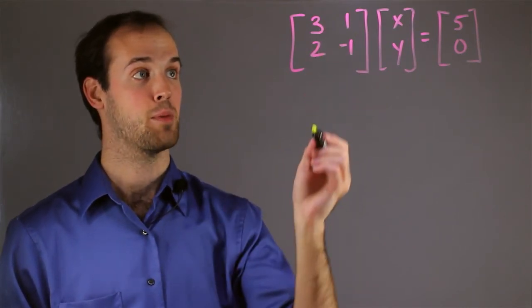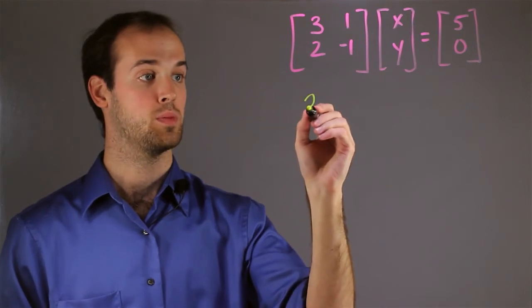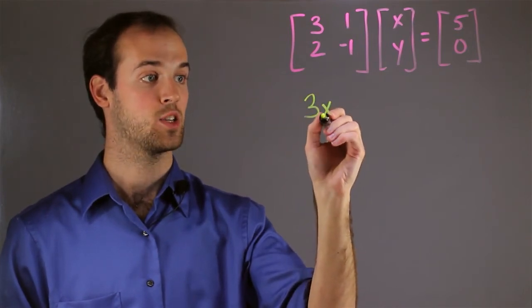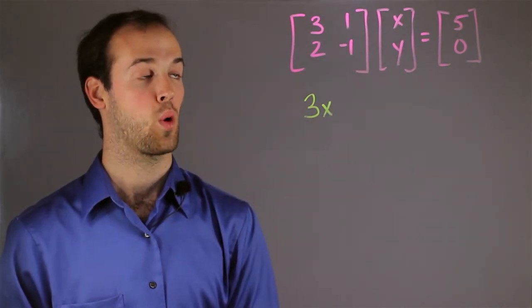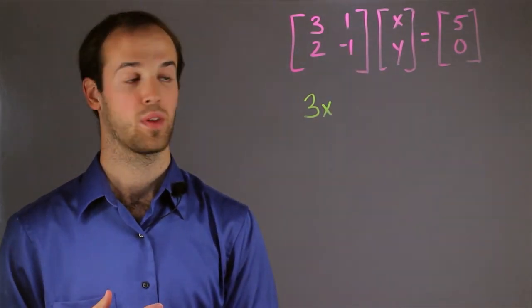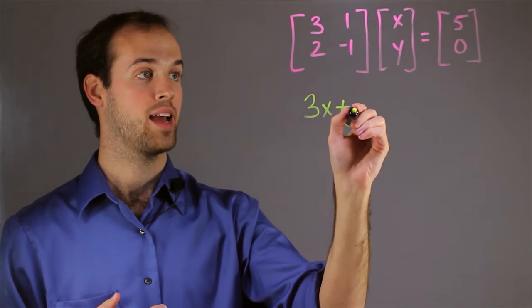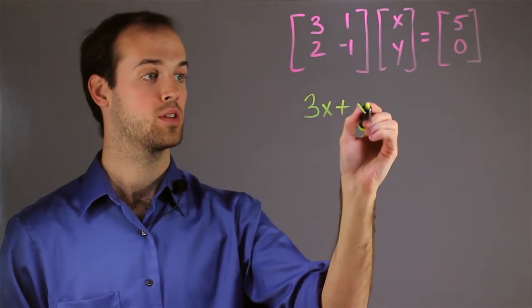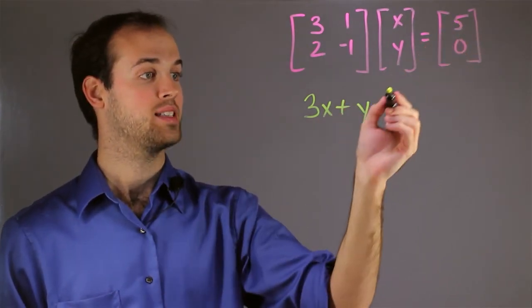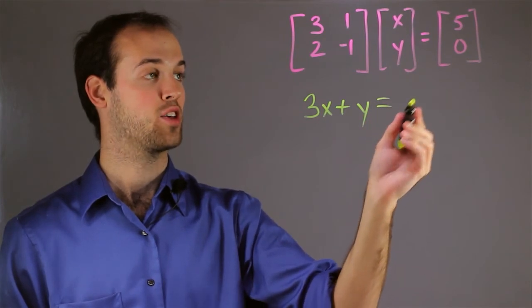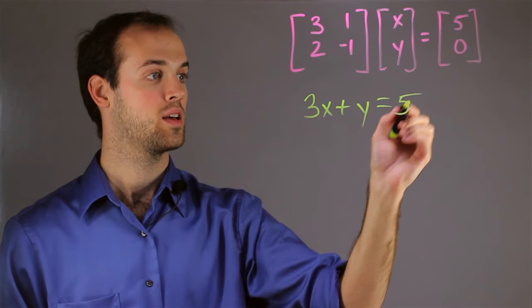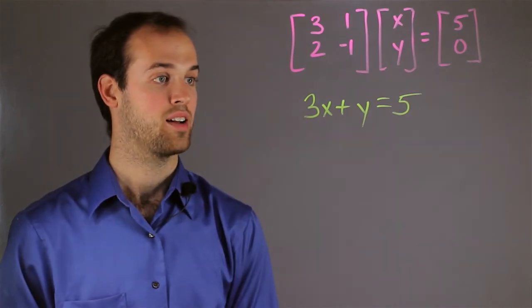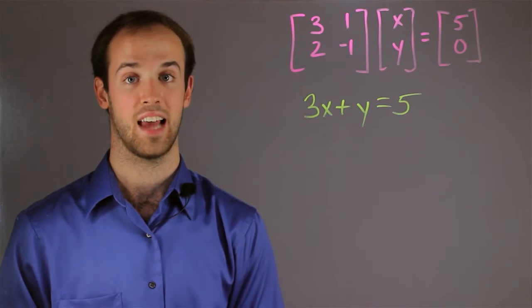So I know that this 3 must be my A term, which means it corresponds to x. So I have 3x, and this 1 must correspond to a y value, which means it's 1y, or just y. And then over here on my right side, I would have my C value, which for the first equation is going to be 5. So there's my first line, 3x plus y equals 5, and again, it's in standard form.